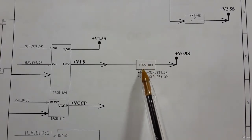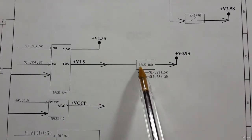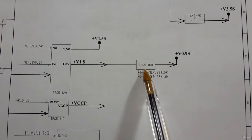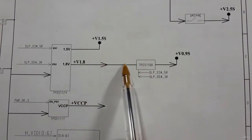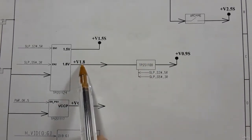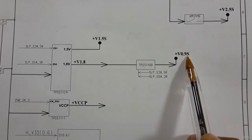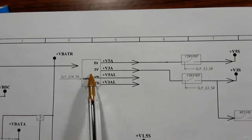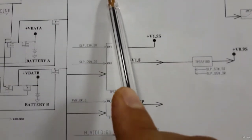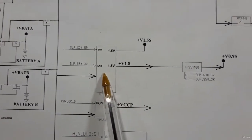The 1.8 volts is also applied to another IC — the TPS51100 on the motherboard. This IC receives 1.8 volts and generates 0.9 volts, also for RAM terminals.